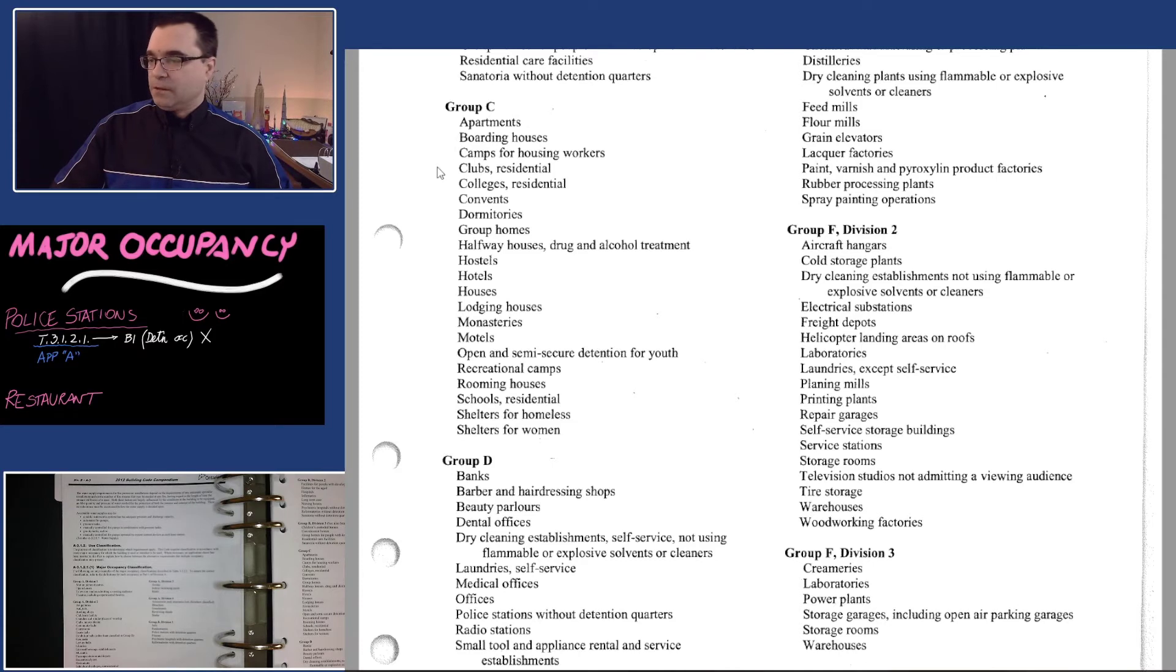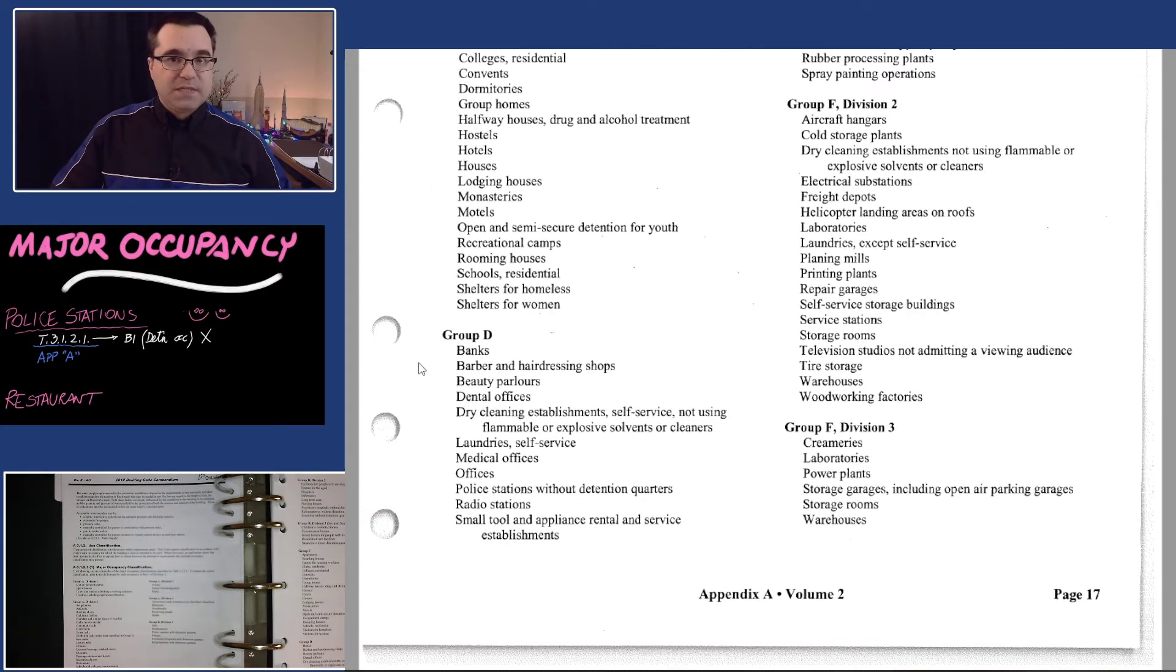Anything under D? Oh, look at this. Police stations without detention quarters. So interestingly enough, from Appendix A we found another possibility for police stations under D. The way that D is different than B1 is that this is without detention quarters. Had we just used Table 3.1.2.1, we would have completely missed the possibility that police stations can also be a D occupancy.